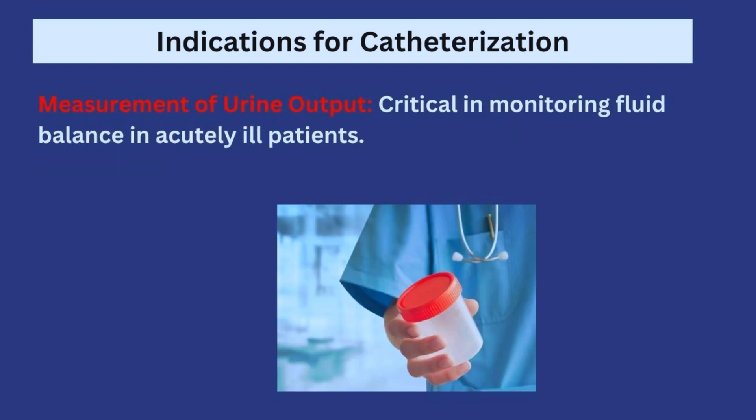Another indication is measuring urine output. If you want to monitor the fluid a patient is taking in and passing out, urinary catheterization is a very good way to do this because you'll be able to measure the quantity of urine each time you drain the catheter bag. The patient can also keep a record of fluid intake, and you can calculate at the end of every day whether there is a positive or negative fluid balance.